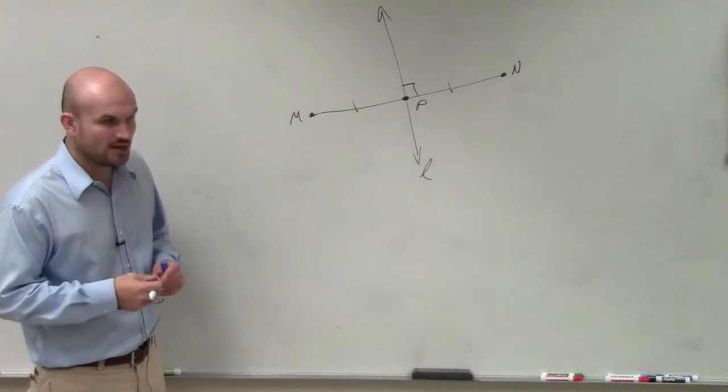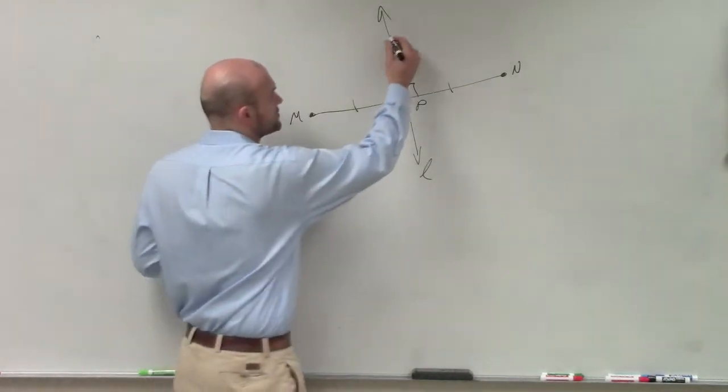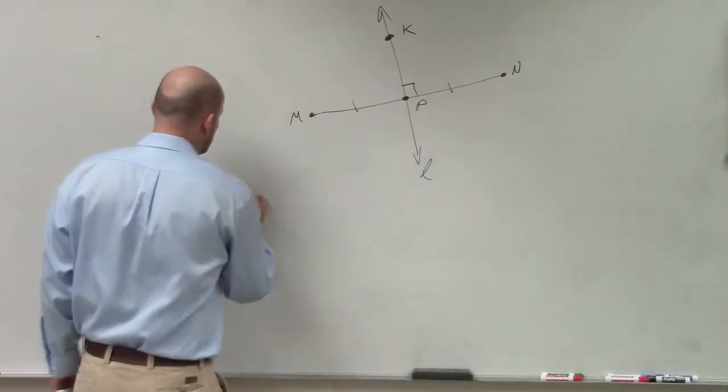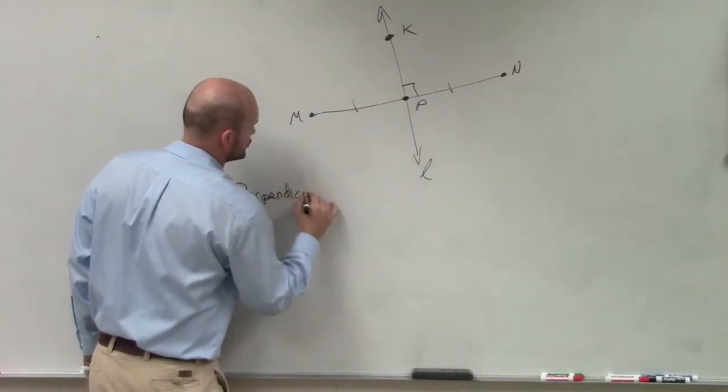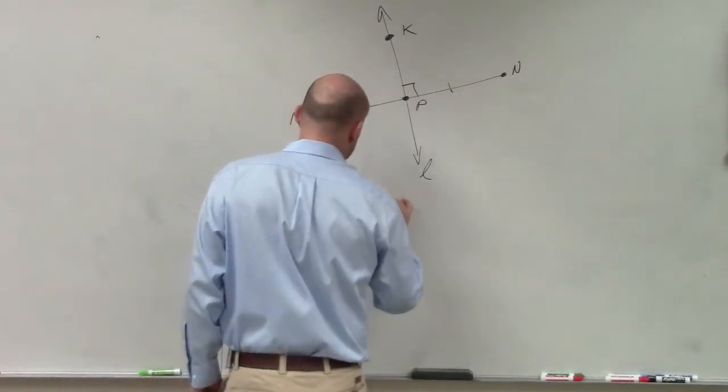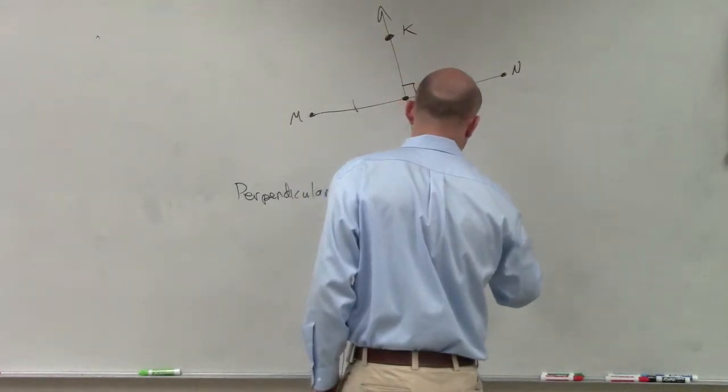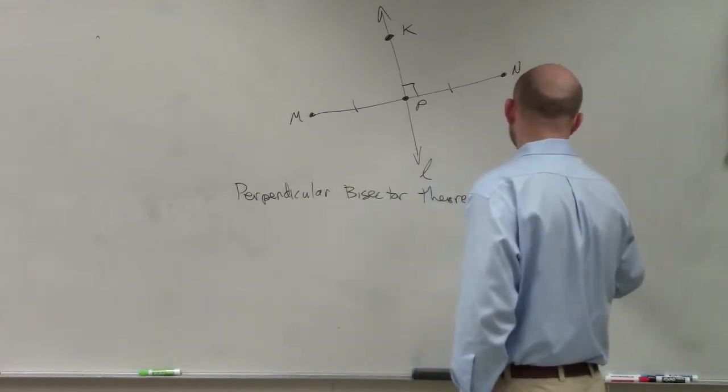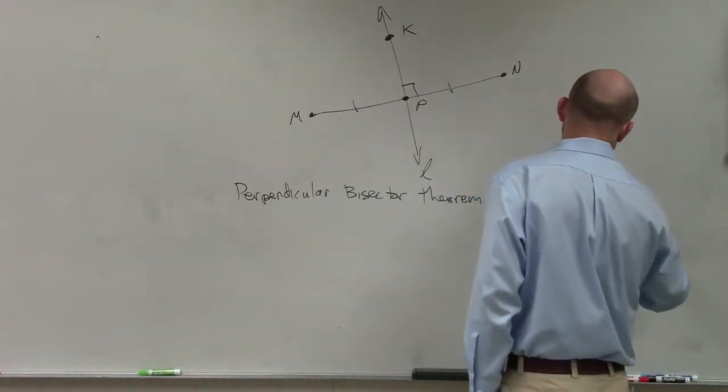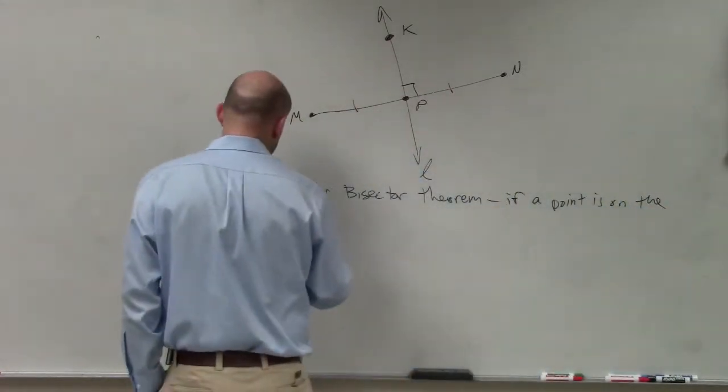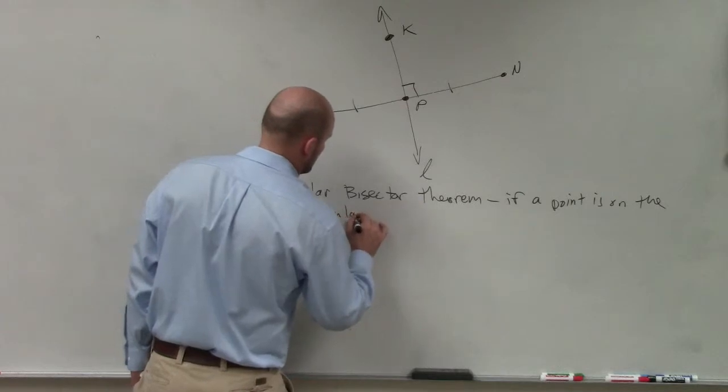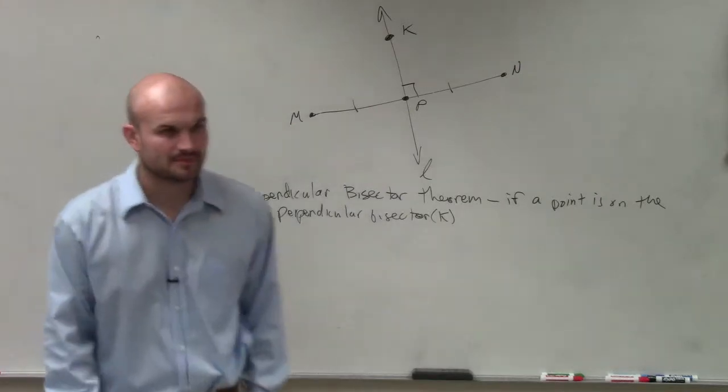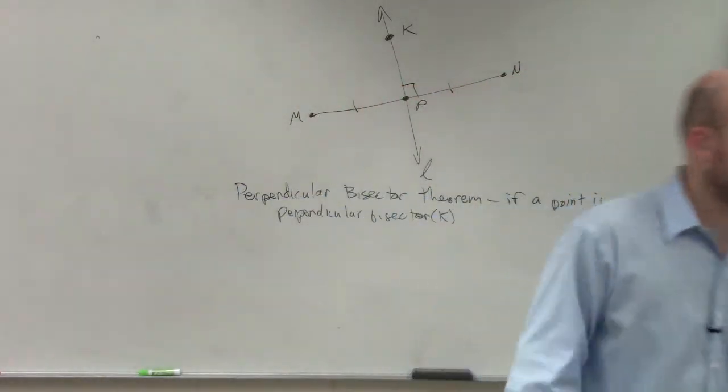So there are two theorems that we talked about, one we already discussed. The first one, let's say we have a nice little point K. So what the perpendicular bisector theorem told us is if a point is on the perpendicular bisector, which is point K in this case, right? This is what we did last class period. So if you already have this, you don't need to re-copy it down.